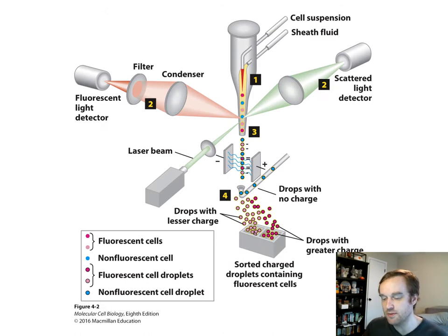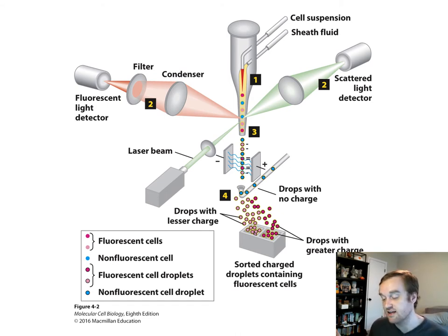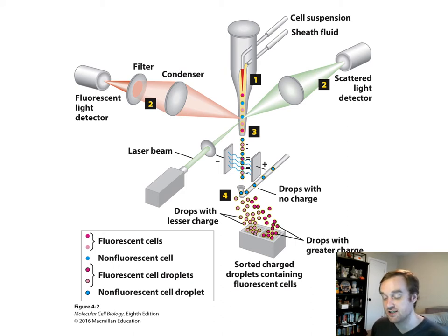The FACS, or fluorescent-activated cell sorter, separates cells based on different levels of fluorescence. For example, if we were to fluorescently tag liver cells in a complex mixture, we would be able to sort them out from surrounding connective tissue, or get very specific and sort out epidermal cells of the heart versus valve tissue.